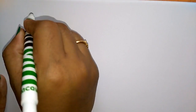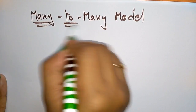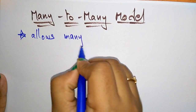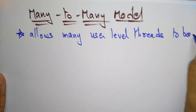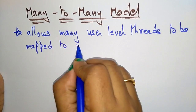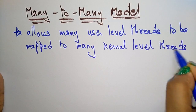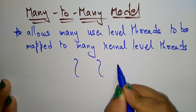Now the many-to-many model. Many-to-many means it allows many user-level threads to be mapped to many kernel-level threads. The operating system can create a sufficient number of kernel threads as needed. An example is Solaris prior to version 9.